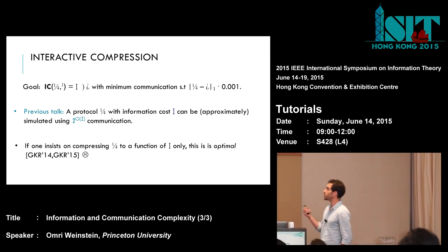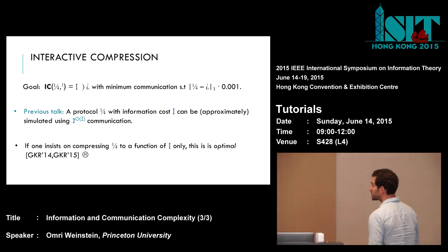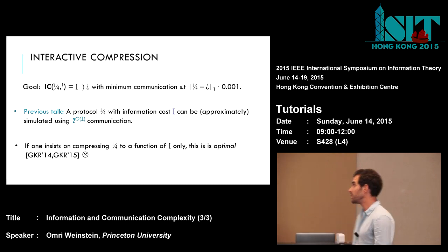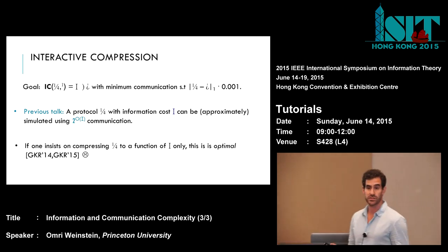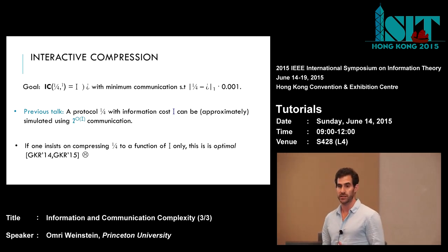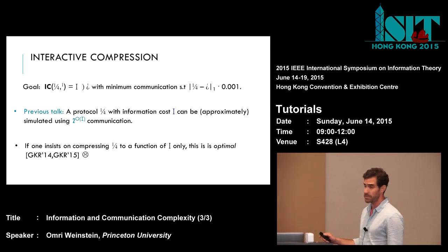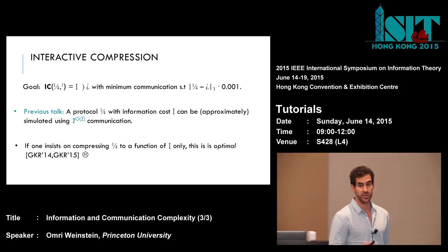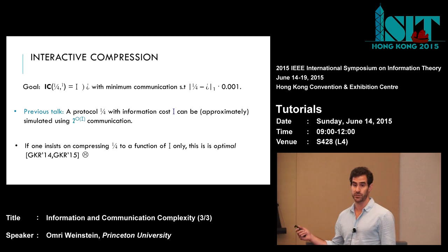Just to recap: we're given a protocol that under some input distribution mu reveals i bits of information, and our goal is to simulate it up to some small statistical error using a smaller communication protocol. Rotem just showed us that such simulation can always be done using exponentially many communication bits — roughly 2^i bits of communication. Unfortunately, as Rotem just explained, if one insists on compressing the protocol to a function which depends entirely on its information, there's nothing better we can do. This result is sharp in terms of the dependence on i.